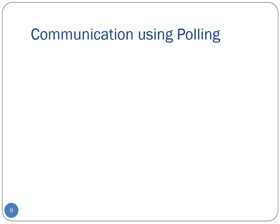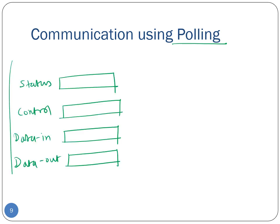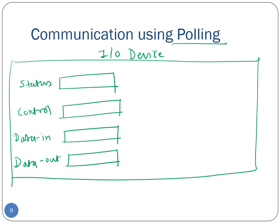With that background, we are now ready to start talking about how device drivers can actually communicate with I/O devices. We will start with the simplest such communication paradigm, known as polling. Let's take an example. Assume we have an I/O device with the four basic registers: the status register, control register, data-in, and data-out registers.